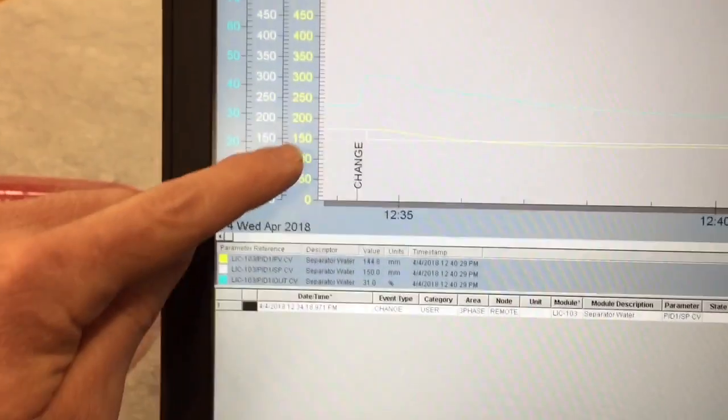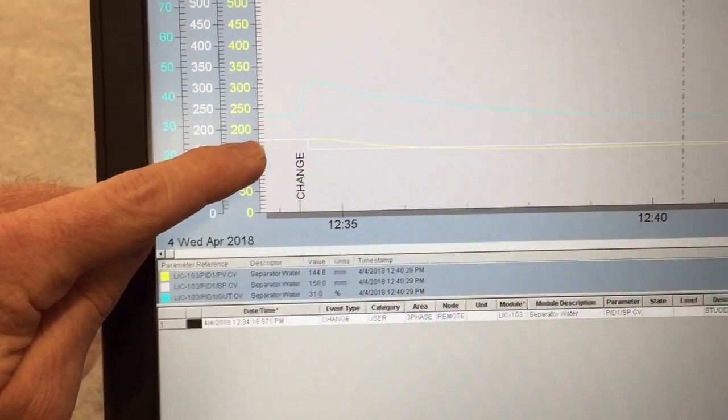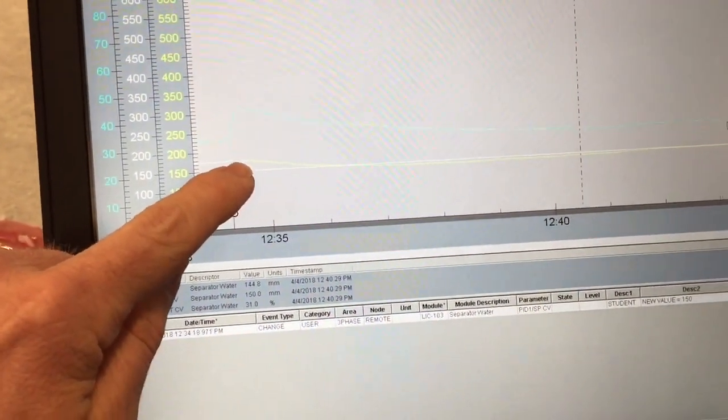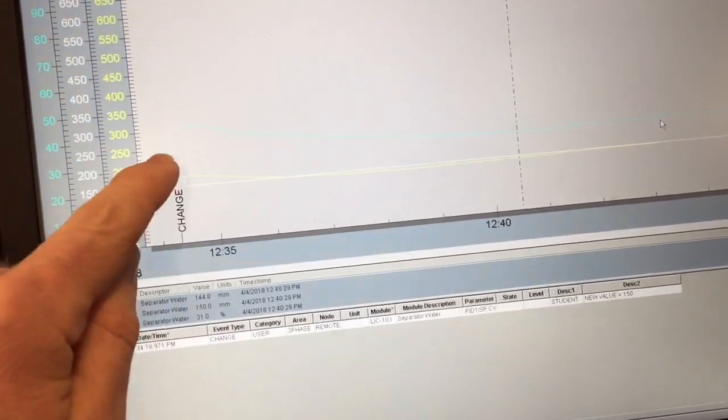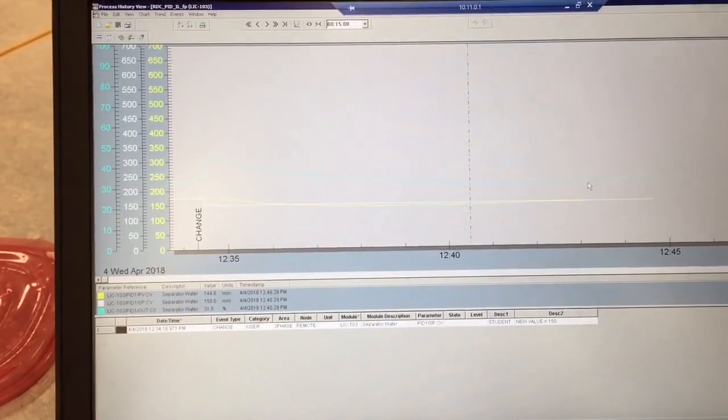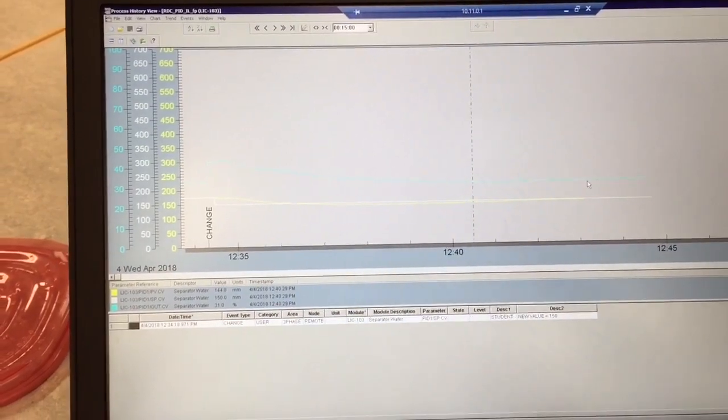So you can see we made our step change from 175 millimeters down to 150 right here. And the interface level came down. This is our controller output here, came down to eventually match the set point. So it appears we have our interface level controller tuned up quite well.